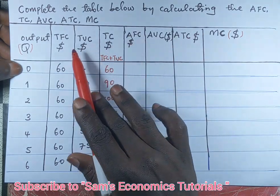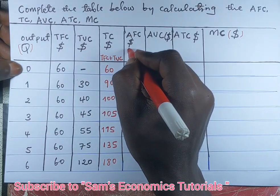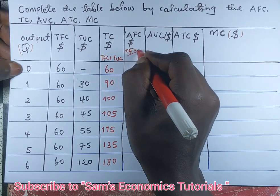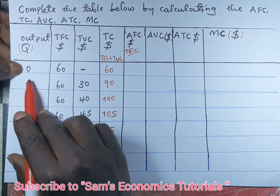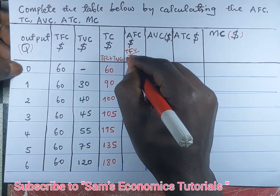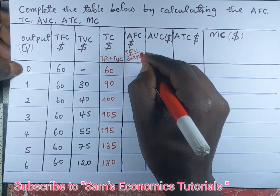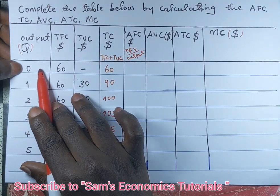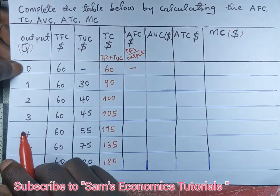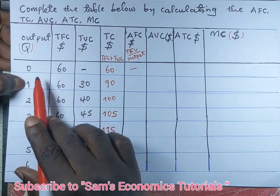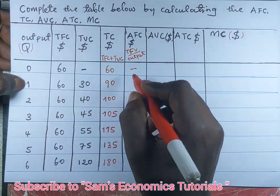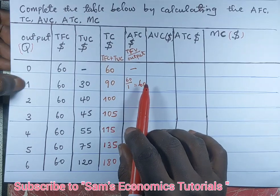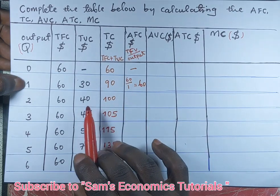Now we look for average fixed cost. Average fixed cost is total fixed cost divided by the total quantity produced (output). Since no unit of output was produced at Q=0, we leave that blank. When one unit of output is produced, we take 60 divided by 1, which gives us 60 US dollars per unit.